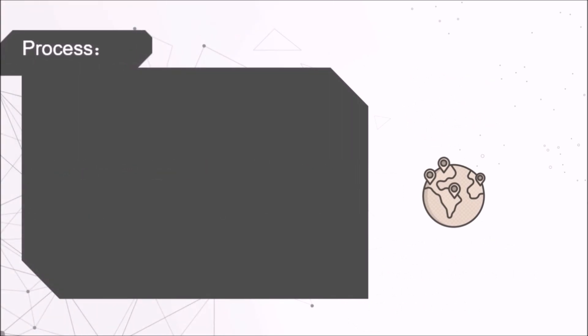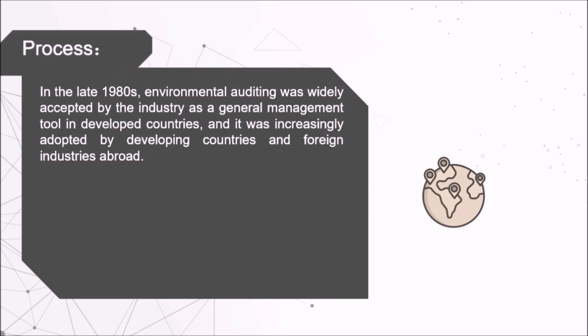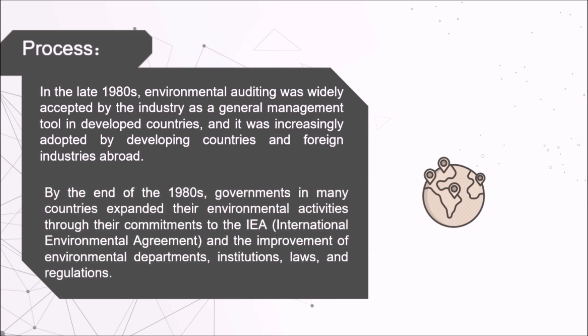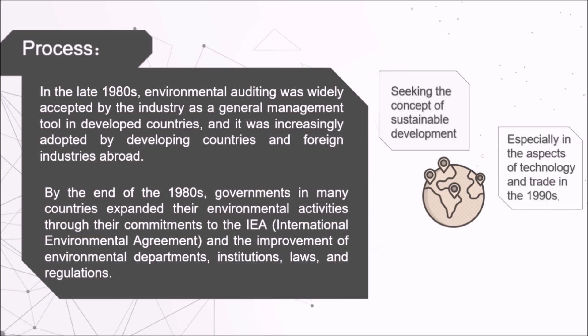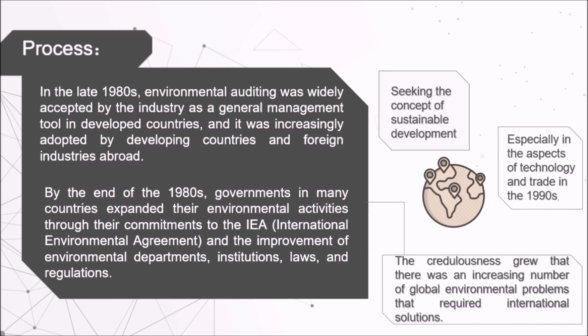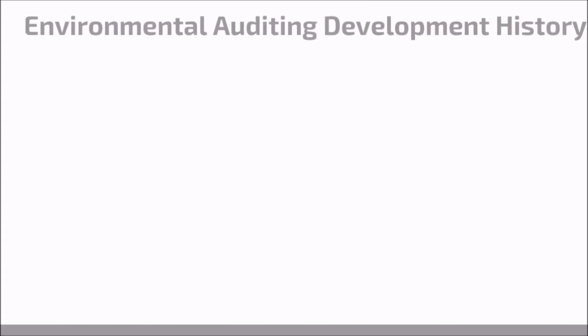In the late 1980s, environmental auditing was widely accepted by industry as a general management tool in developed countries, and it was increasingly adopted by developing countries and foreign industries abroad. By the end of the 1980s, governments in many countries expanded their environmental activities through their commitments to International Environmental Agreements and the improvement of environmental departments, institutions, laws, and regulations. In the end of the 20th century, seeking the mode of sustainable development was integrated into the continuous improvement on technology and trade. Overall, an increasing number of communities believed that global environmental problems require national cooperation.